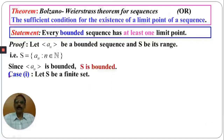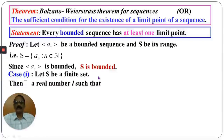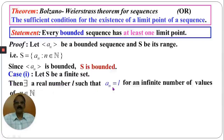We have two cases to consider, as illustrated by the examples: the range set S may be finite or infinite. In Case 1, let the range set be a finite set. Then there exists a real number l such that a_n equals l for an infinite number of values of n belonging to the natural numbers.